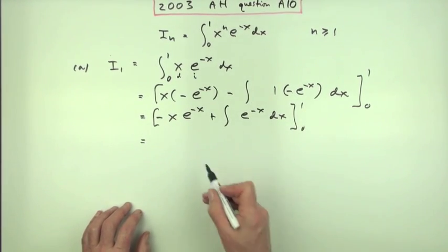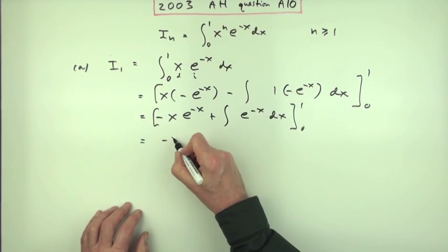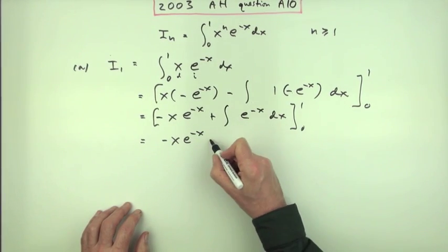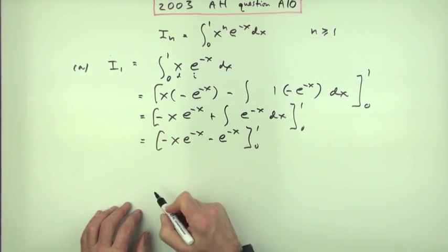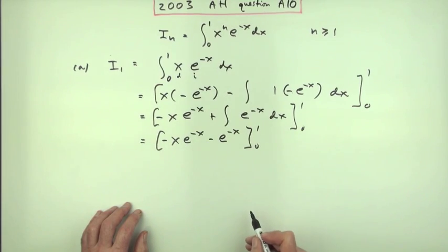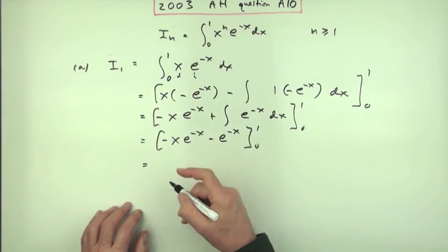Whichever way you prefer. So evaluating this expression then would be, I've got negative x e to the negative x minus e to the negative x to evaluate from 0 to 1. Now I could tidy that up. I could take out negative e to the x and leave a 1 plus x, or I could just put it the way it is just now.